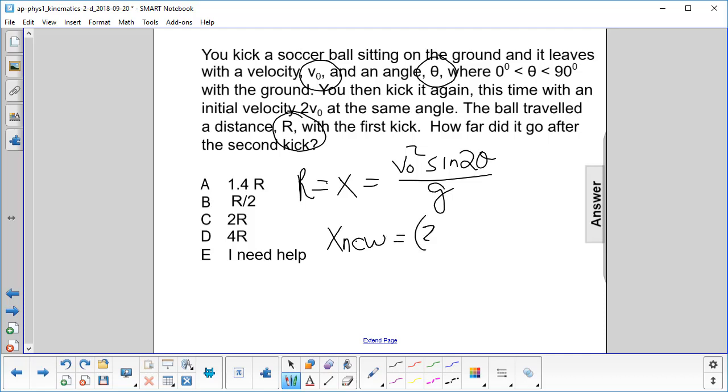So we put in here 2v0 squared sine 2 theta over g. Now we know that theta is the same, because that's how we kicked it, same angle, twice the velocity.